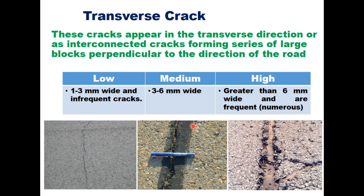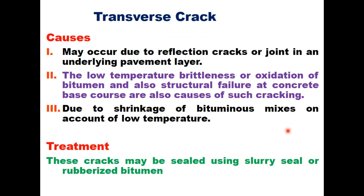Transverse cracks appear in the transverse direction or as interconnected cracks forming a series of large blocks perpendicular to the direction of the road. Severity is classified as low (1–3 mm), medium (3–6 mm), or high (greater than 6 mm). Causes include reflection of cracks or joints from an underlying pavement layer, low temperature, brittleness or oxidation of bitumen, structural failure at concrete base courses, or shrinkage of bitumen mixes at low temperature. These cracks may be sealed using slurry seal or rubberized bitumen.